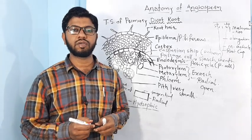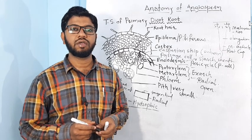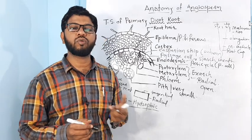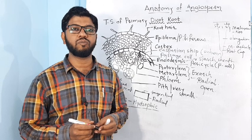This is all about the structure and anatomy of dicot primary root. Similar to this, if you compare the anatomical structure of monocot root,